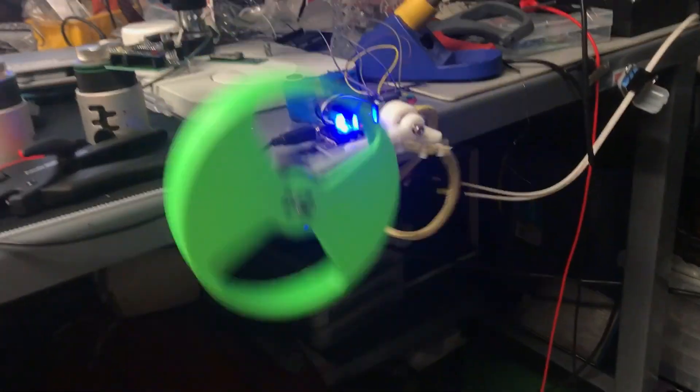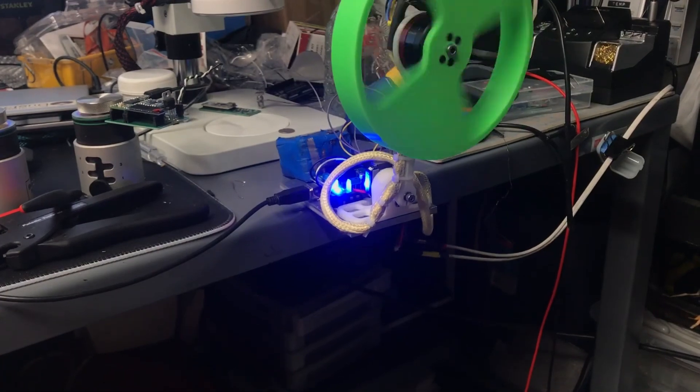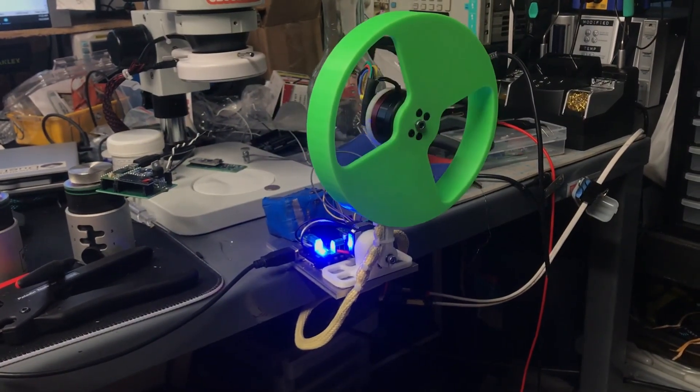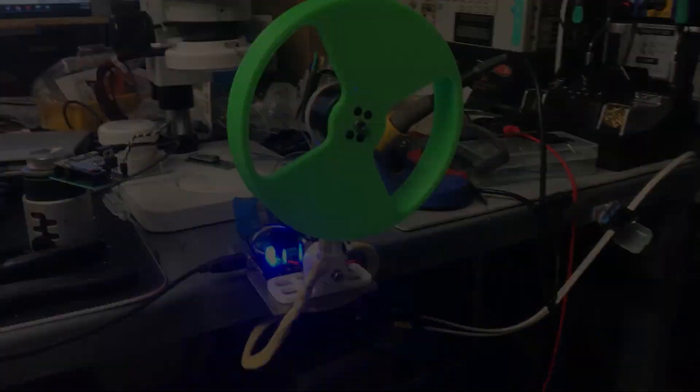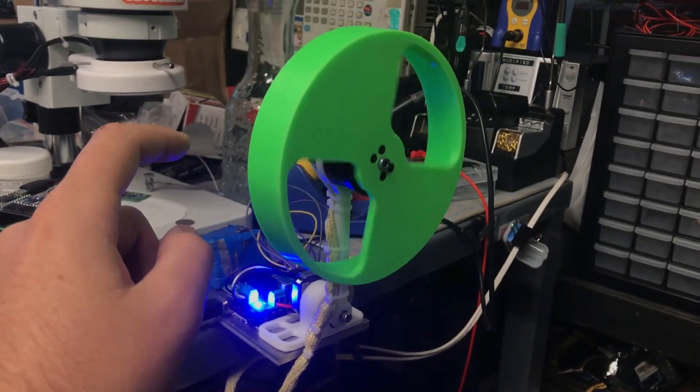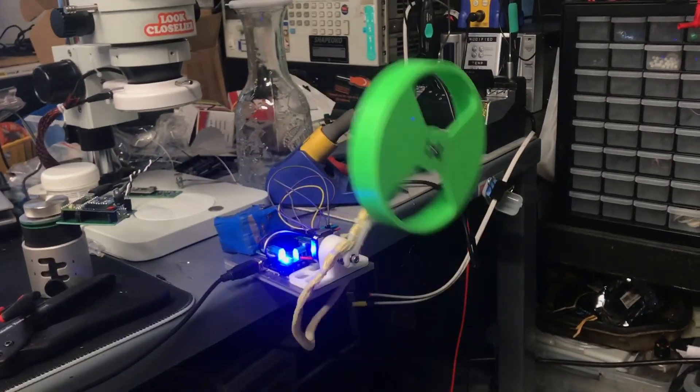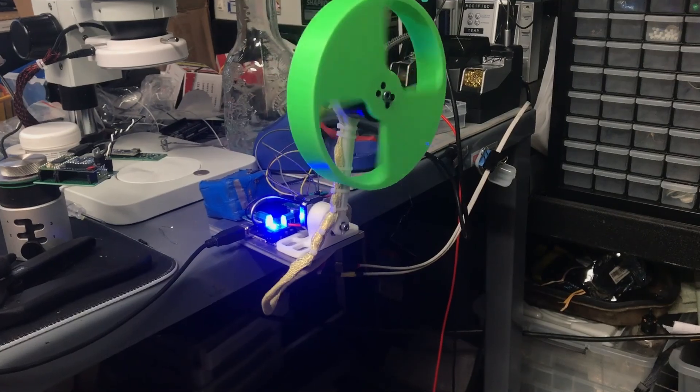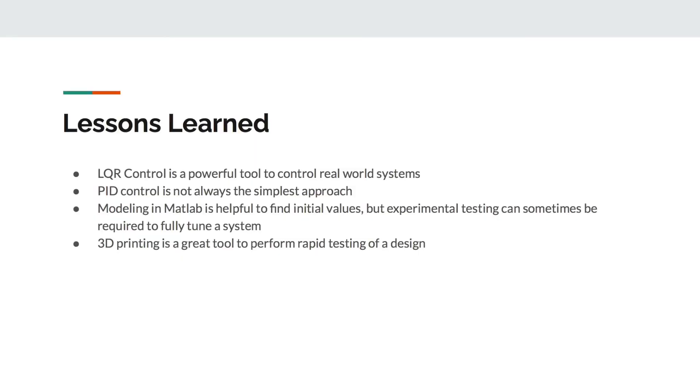Here you can see our inverted pendulum swinging up and then stabilizing. Now that it's stabilized, we introduce some disturbances to see how the system reacts. As you can see, our system is able to survive small disturbances, but not large ones.